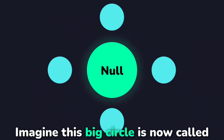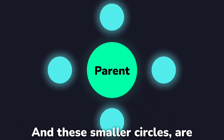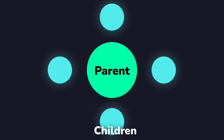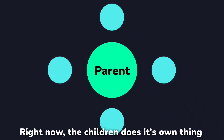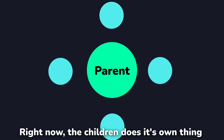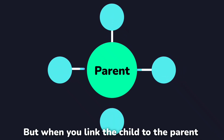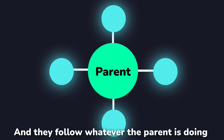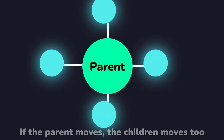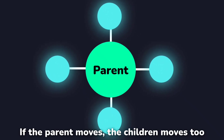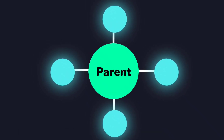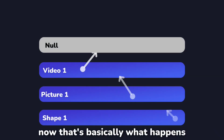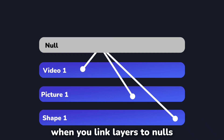Now, imagine this big circle is called a parent, and these smaller circles are children. Right now, the children do their own thing. But when you link the child to the parent, the child listens to the parent, and they follow whatever their parent is doing. If the parent moves, the children move too. That's basically what happens when you link layers to nulls.